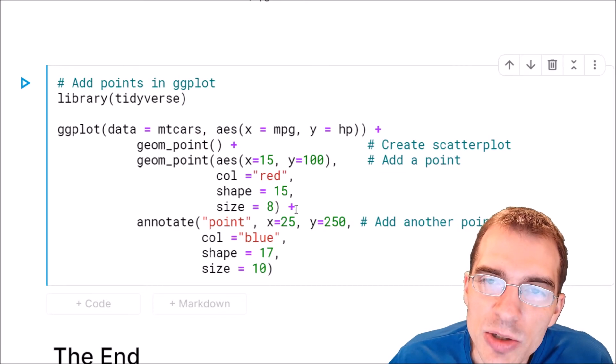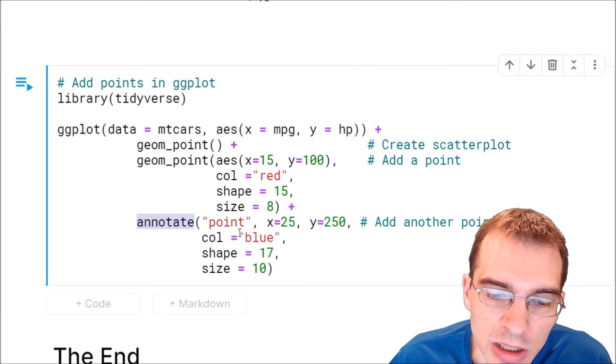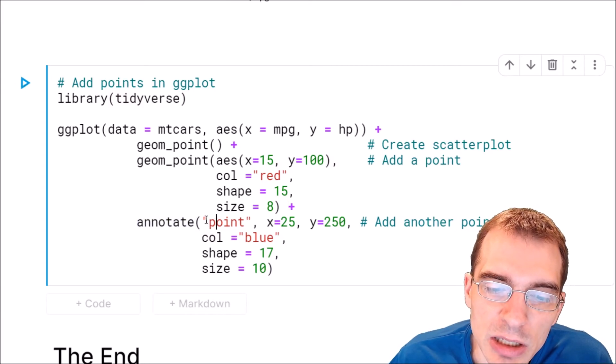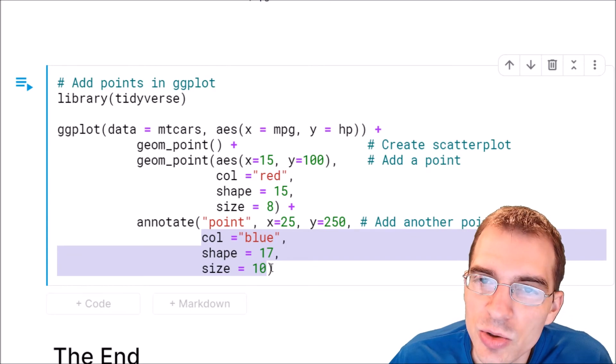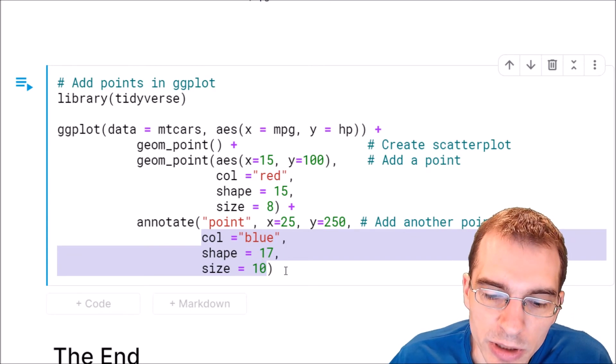You can also use annotate to do the same thing. So if we wanted to do that for our second point, we'll say plus, add another point, annotate. Then the first argument to annotate is the type of annotation you want. In this case we just want a point. So we'll say point here. After that we can pass in our X and Y coordinates. And again we can pass in some additional arguments here to give it a shape and some coloring.